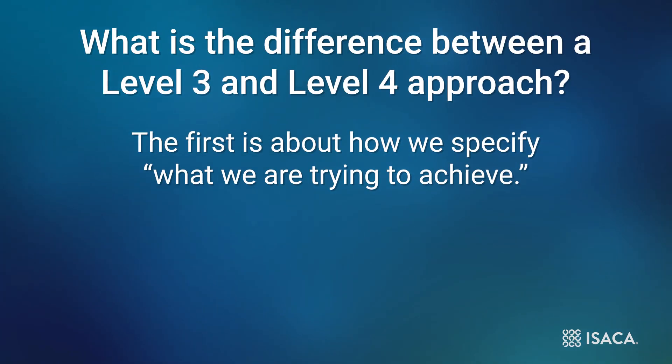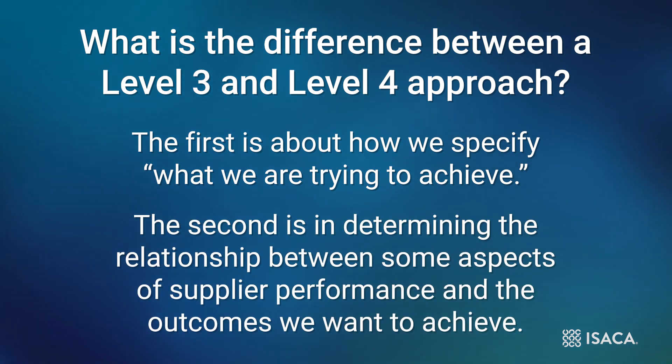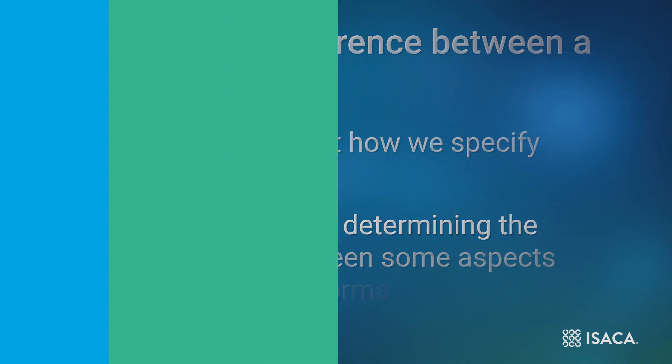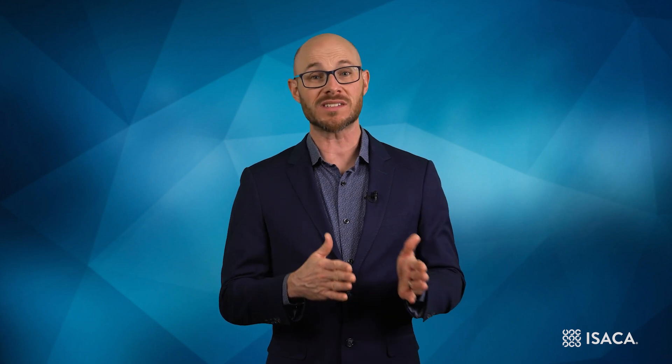The second difference in behavior between level 3 and level 4 is in determining the relationship between aspects of supplier performance and the outcomes we want to achieve. At level 3, we may do this qualitatively. Organizations operating in a level 4 manner will do this statistically, by determining the measured aspect of the supplier performance and an outcome of importance that impacts a QPPO. For example, at level 3, we may intuitively determine that the speed with which suppliers answer technical questions in an engineering project may have an impact on our ability to meet milestones. But at level 4, we can confirm that there is a correlation between these two parameters and also quantify the magnitude of the effect.